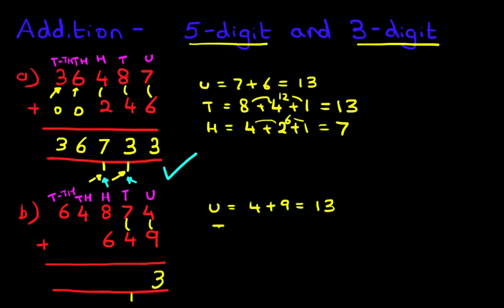Now we're going to add the tens. We've got seven plus four plus one. Seven plus four is 11, plus the one is 12. Let's write that down. We've got one here, two over here.